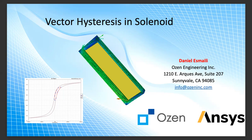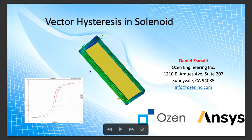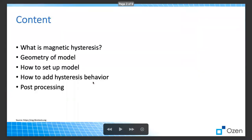In today's presentation, I'm going to talk about the solenoid you see in this picture and show how we can use Maxwell, which is an ANSYS product, to produce a hysteresis profile for this armature. I'll cover what magnetic hysteresis is, explain the geometry of the model, how to set it up, how to add hysteresis behavior, and post-processing.